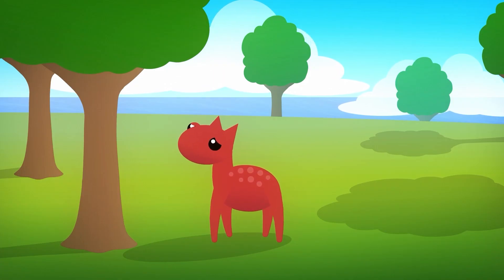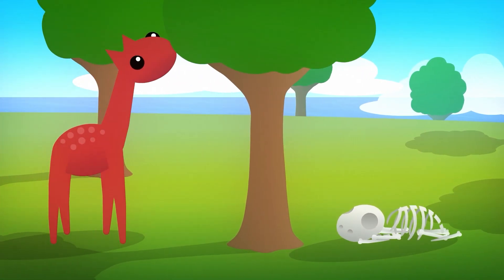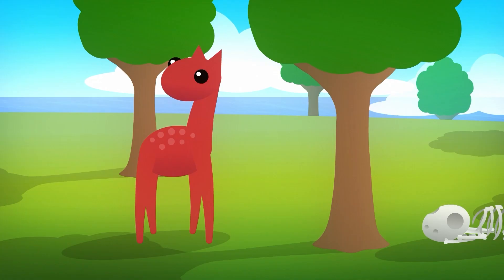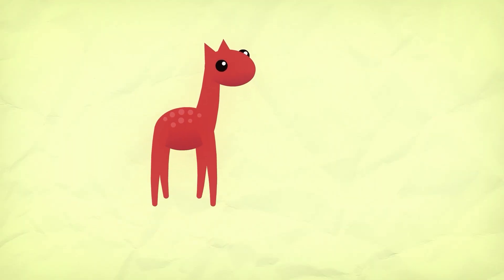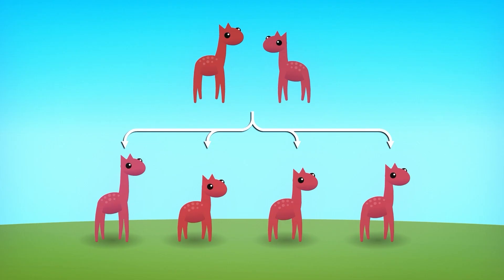Therefore, it is likely that it will remain hungry and weak, and die before producing offspring. Another individual, who happens to be tall, reaches the highest leaves, is well fed, and grows healthy and strong. It easily finds a mate and produces offspring. They inherit the genetic traits of their parents, and will also tend to be tall.